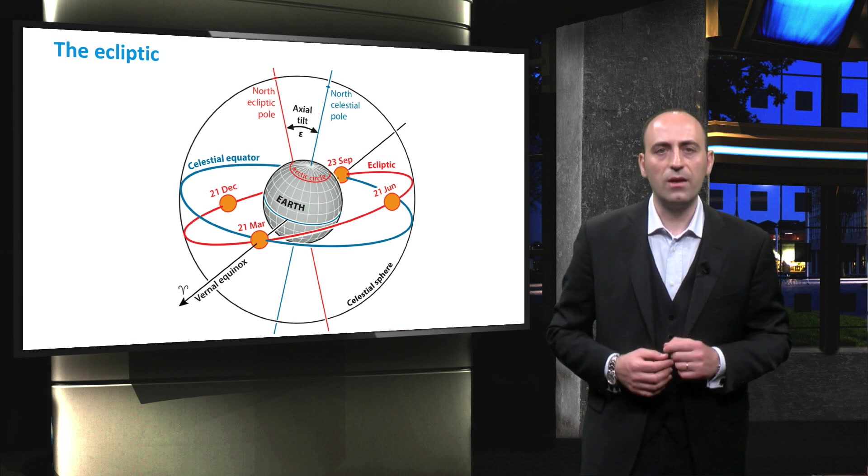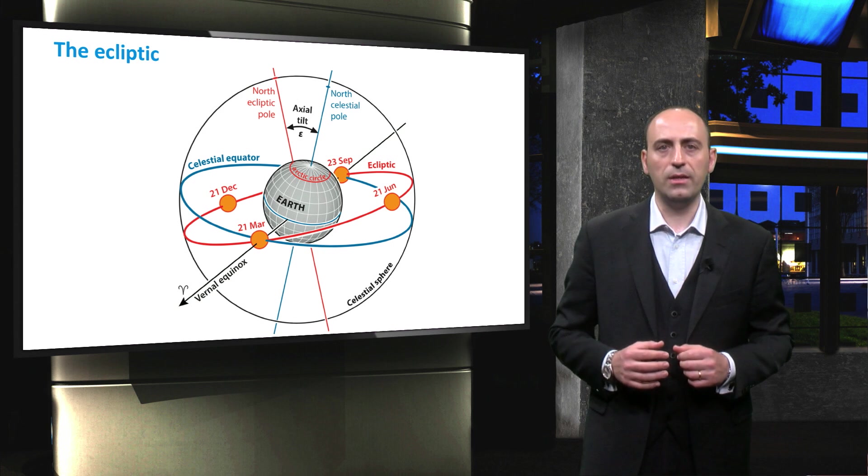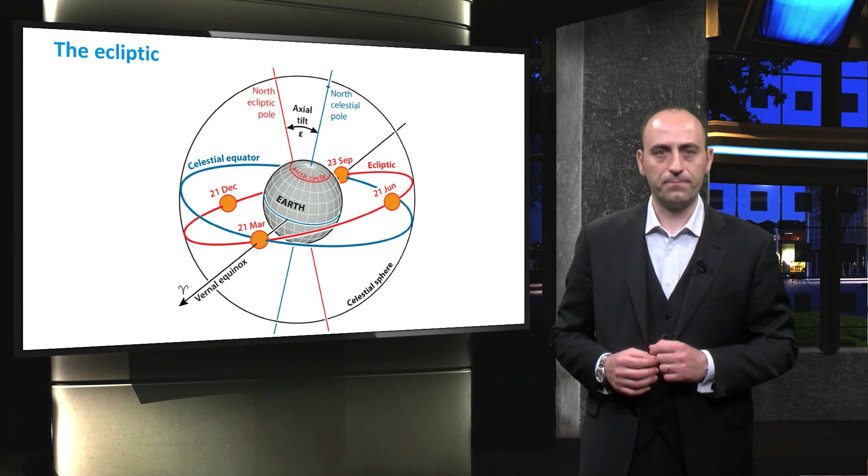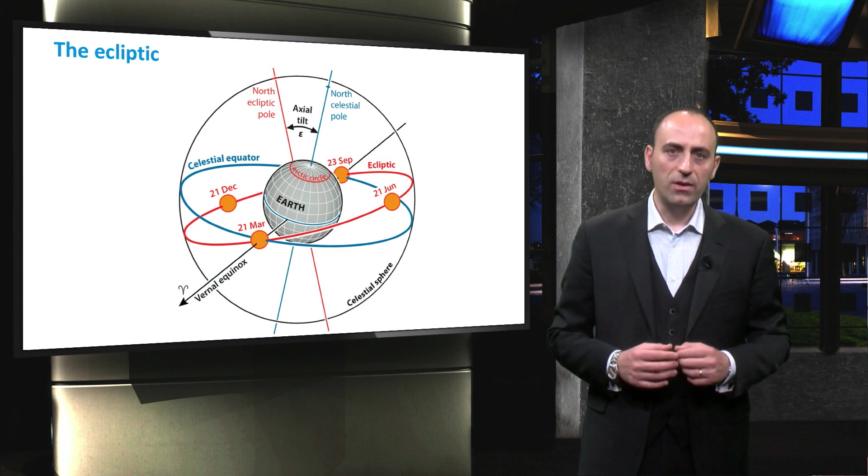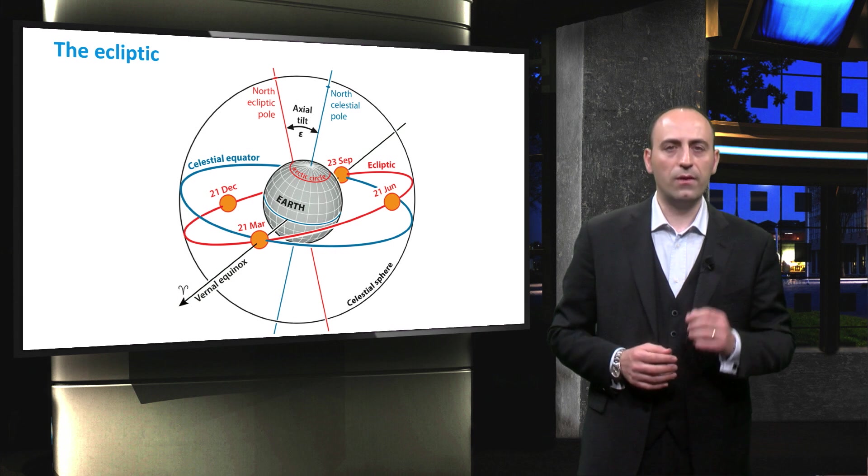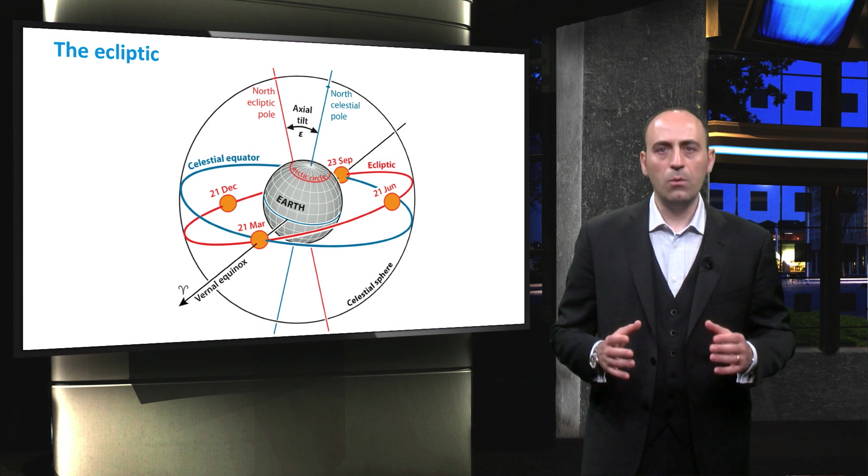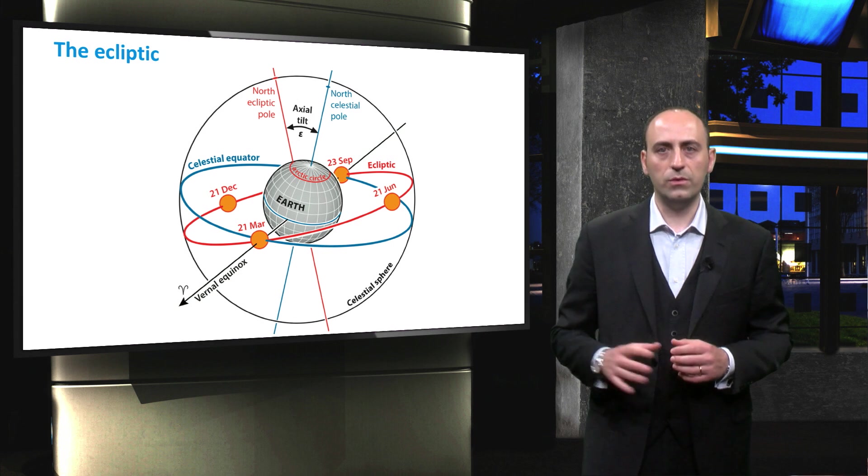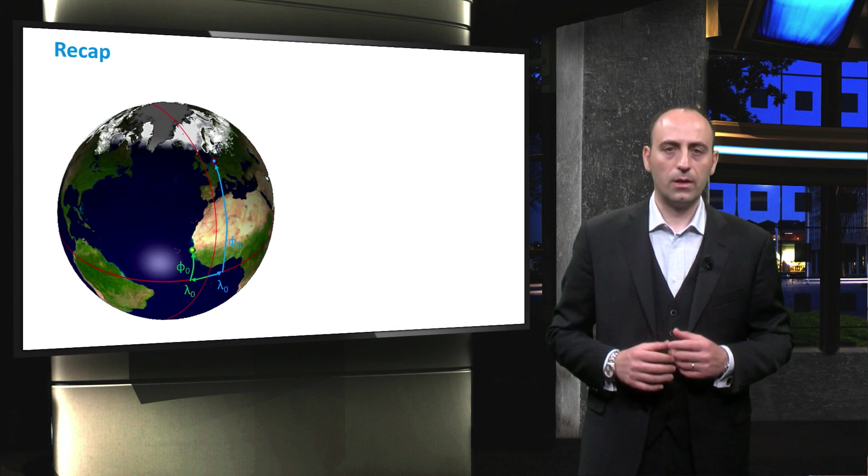Very important is the vernal equinox, that is the principal direction of the coordinate system indicated by the sign of Aries. As it is obvious from the picture, the Aries lies in both the ecliptic and the equatorial planes, making it a reference position. As for the geographic coordinate system, here we have two angular coordinates called the ecliptic longitude and the ecliptic latitude.